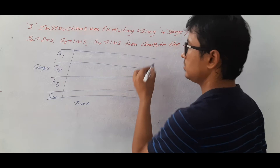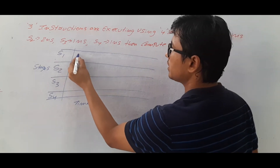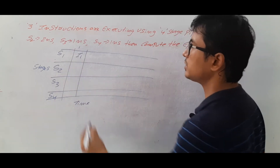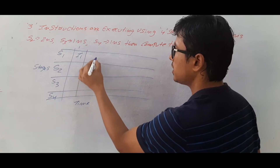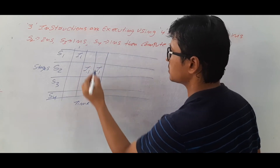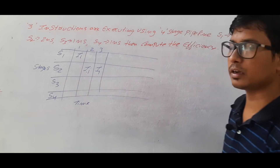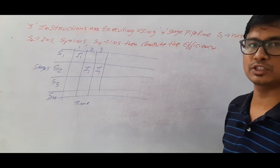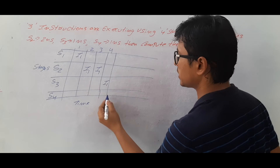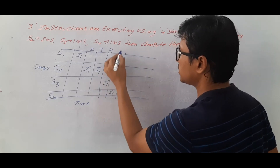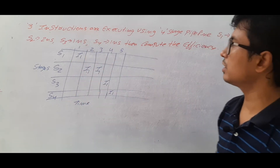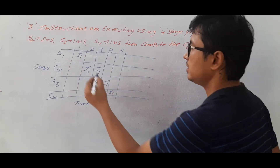Instruction one will be executed in stage one in one nanosecond. Then it moves to stage two and runs for two nanoseconds. Then it comes to stage three and executes for one nanosecond, then stage four for one nanosecond. So instruction one takes a total of five nanoseconds.